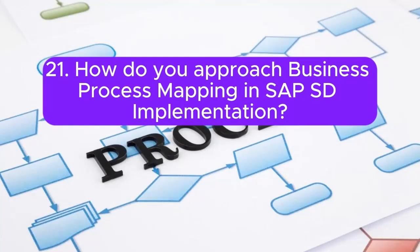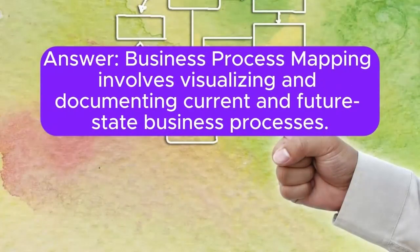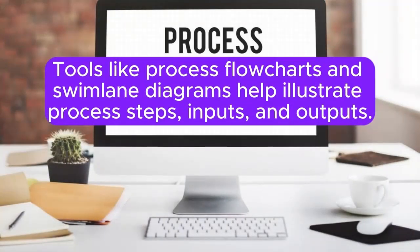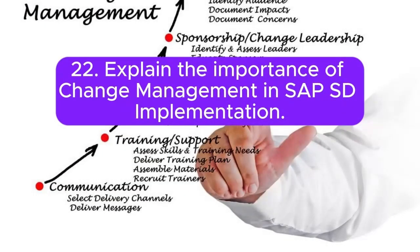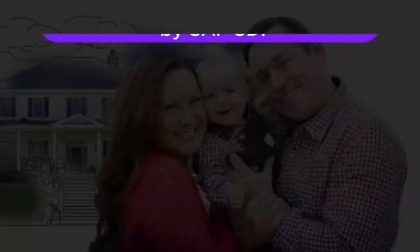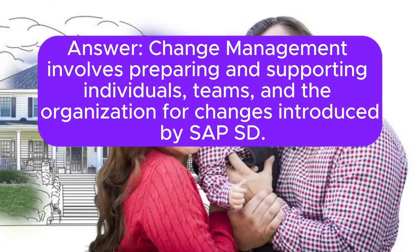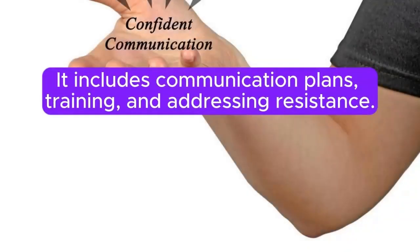Question 21: How do you approach business process mapping in SAP SD implementation? Answer: Business process mapping involves visualizing and documenting current and future state business processes. Tools like process flowcharts and swimlane diagrams help illustrate process steps, inputs, and outputs. Question 22: Explain the importance of change management in SAP SD implementation. Answer: Change management involves preparing and supporting individuals, teams, and the organization for changes introduced by SAP SD. It includes communication plans, training, and addressing resistance.